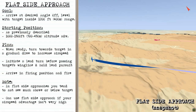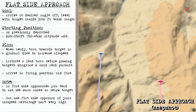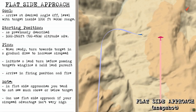With a flat side approach, the goal is to arrive at a desired angle off — whether high or low — at the target inside of around 1200 feet. The starting position has around 1500 feet of altitude advantage initially. When ready, turn towards the target in a gradual dive to increase airspeed. Then initiate a lead turn before passing the target's wing line, hold lead pursuit to close the range, and arrive in firing position. Because the attack is flat you tend not to see as much above or below the target, but you can use this approach if your airspeed advantage isn't very high.